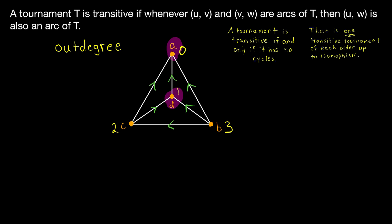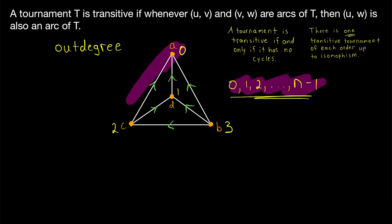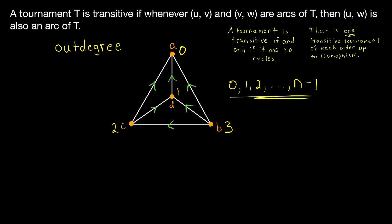Now, of course, in a graph with N vertices, the possible out-degrees are 0, 1, 2, and so on, all the way up to N minus 1. And in a transitive tournament, since every vertex has a different out-degree, all of the possible out-degrees will be accounted for. In this case, N minus 1 is 4 minus 1, which is 3. So the possible out-degrees were 0, 1, 2, and 3. And those are all of our out-degrees.